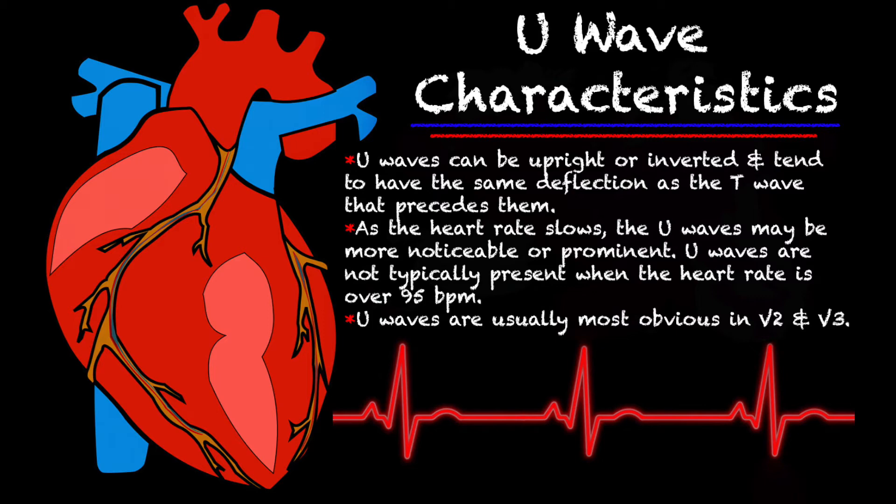As the heart rate slows, U-waves become more obvious and more noticeable. U-waves are not typically present when the heart rate is fast — really anything over 95 beats per minute. U-waves are most obvious in V2 and V3, but they can be scattered throughout the 12-lead.